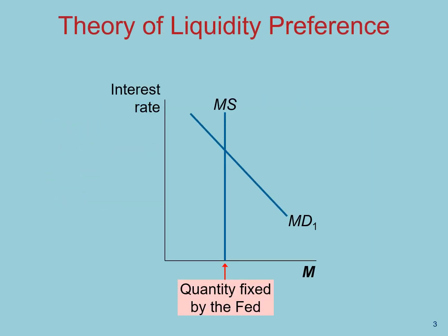To unpack the interest rate effect and how monetary policy influences investment, we will use the theory of liquidity preference. We will represent this theory with a demand and supply diagram. Money demand reflects how much wealth people want to hold in liquid form, as compared to other forms of assets. The money supply is, of course, determined by the Fed. The interest rate will adjust to balance out the forces of supply and demand.